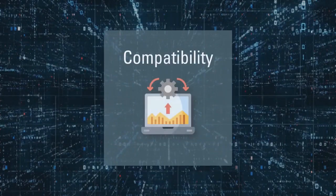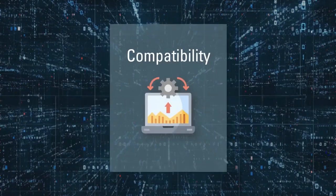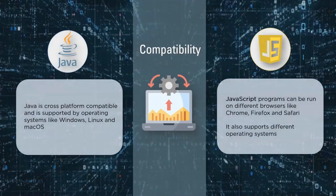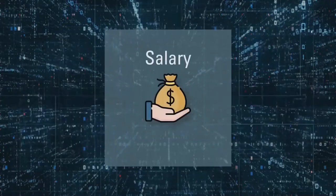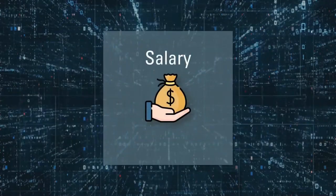The next feature is compatibility. Since Java and JavaScript are such widely used languages, they both offer excellent compatibility. Java is cross-platform compatible and is supported by operating systems like Windows, Linux, and Mac OS. JavaScript, on the other hand, can be run on different browsers like Chrome, Firefox, and Safari, and also supports different operating systems like Windows, Linux, and Mac OS. The last factor for comparison is salary. The average salary of a Java developer in India is around 4,47,000 rupees per annum, while in the U.S. it is around $74,000 per annum.